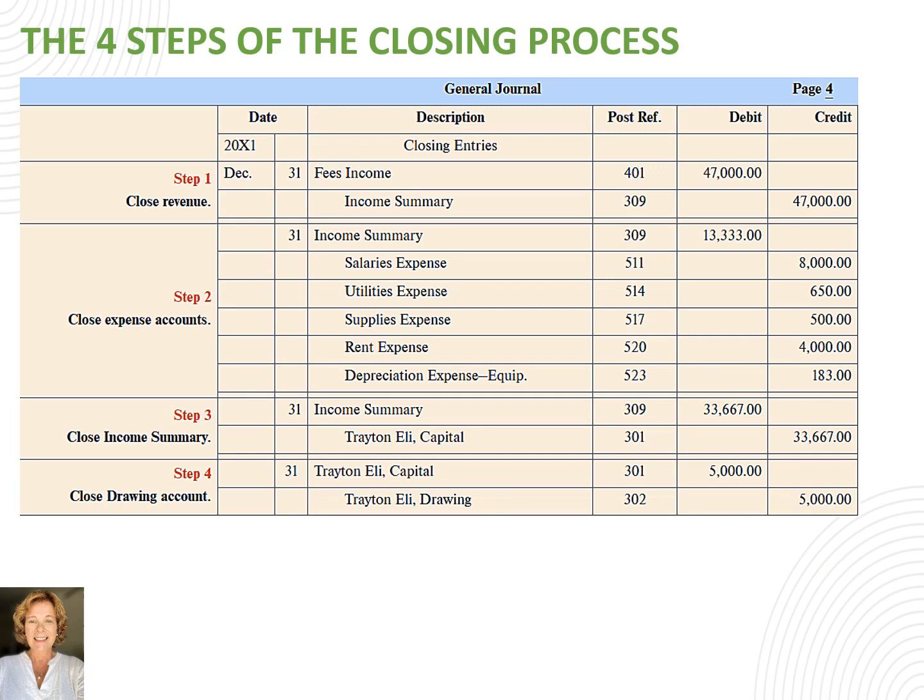There you have it. The four steps of the closing process include: 1. Close revenue accounts. 2. Close expense accounts. 3. Close income summary. 4. Close the drawing account. The next step is to post the journal entries into the general ledger.